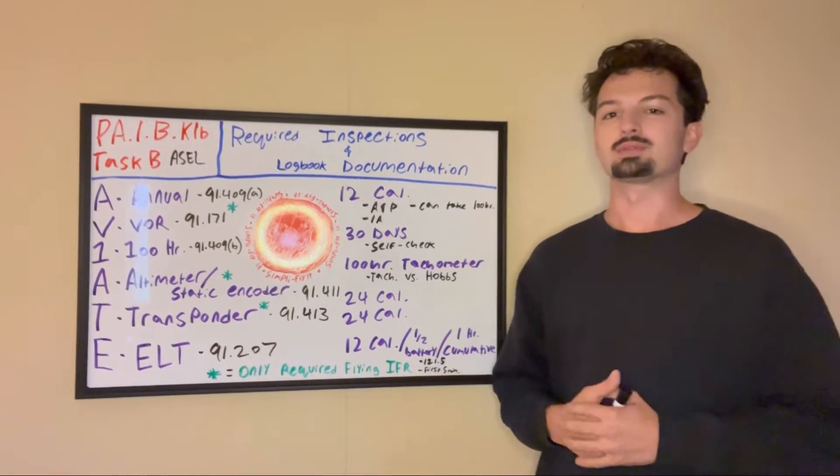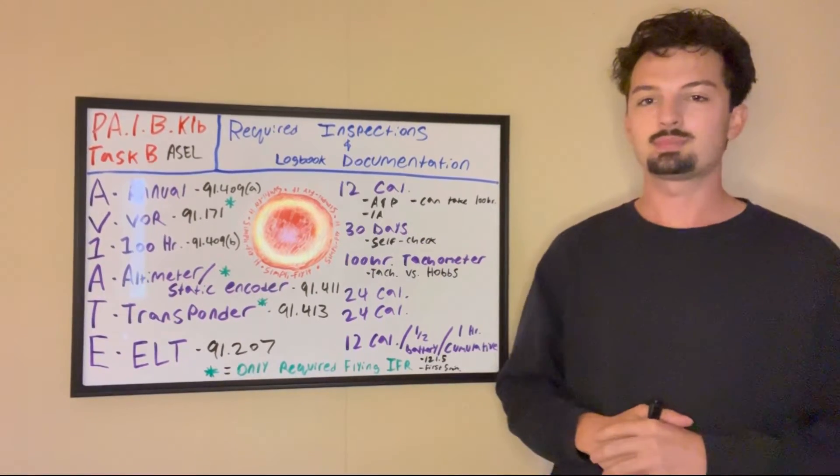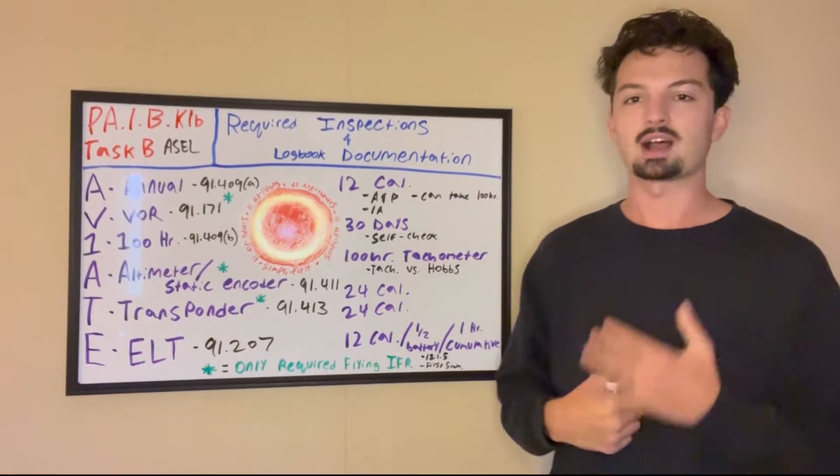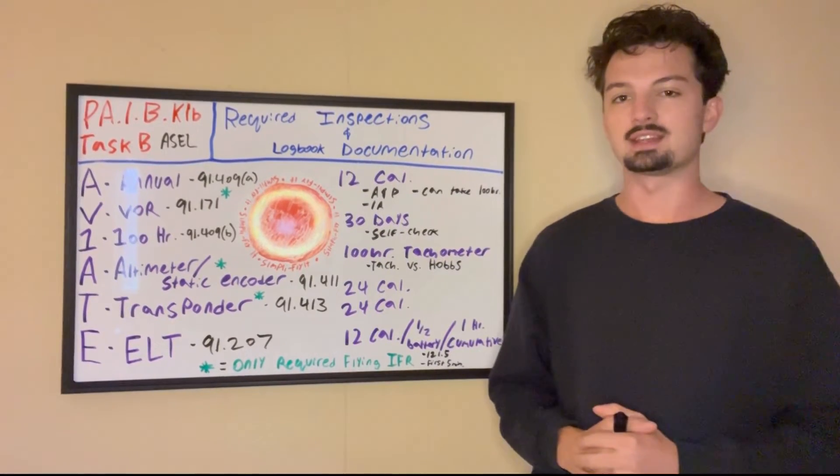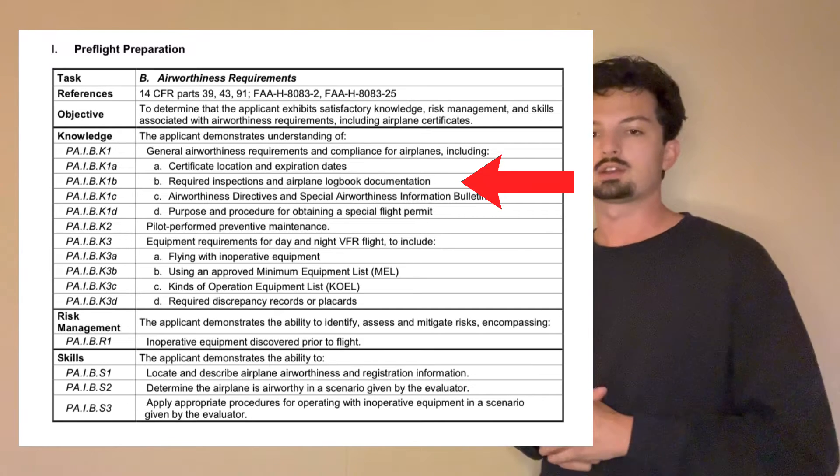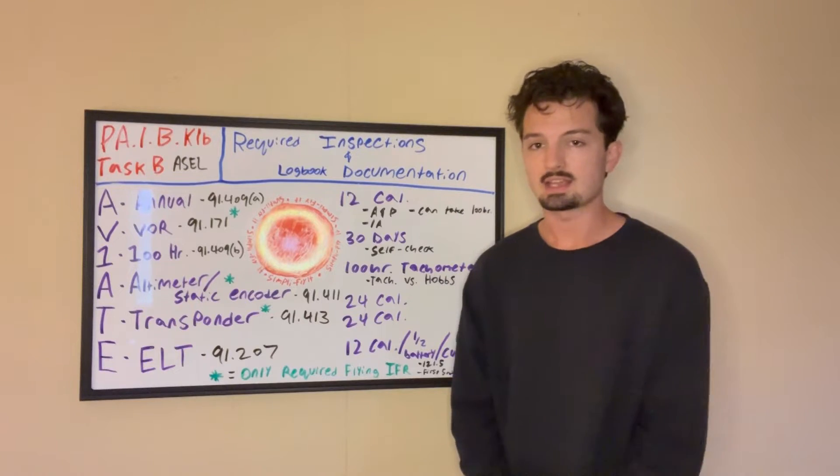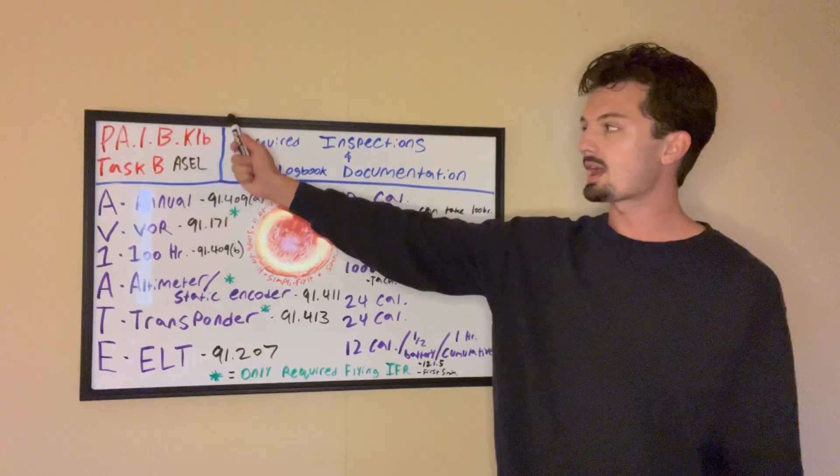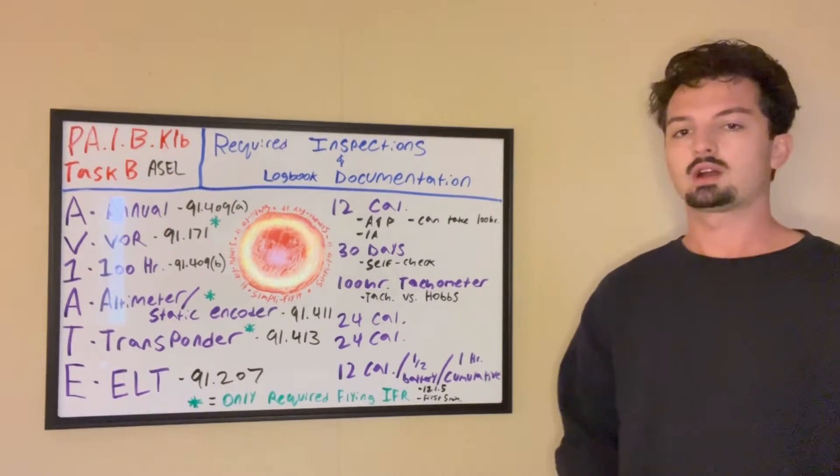What's up YouTube? Welcome back to Simplify It, where we're breaking down the ACS piece by piece every single day. I'm Garrett, a flight instructor, and today we're covering required inspections and airplane logbook documentation. The task in the ACS is PAIBK1B.